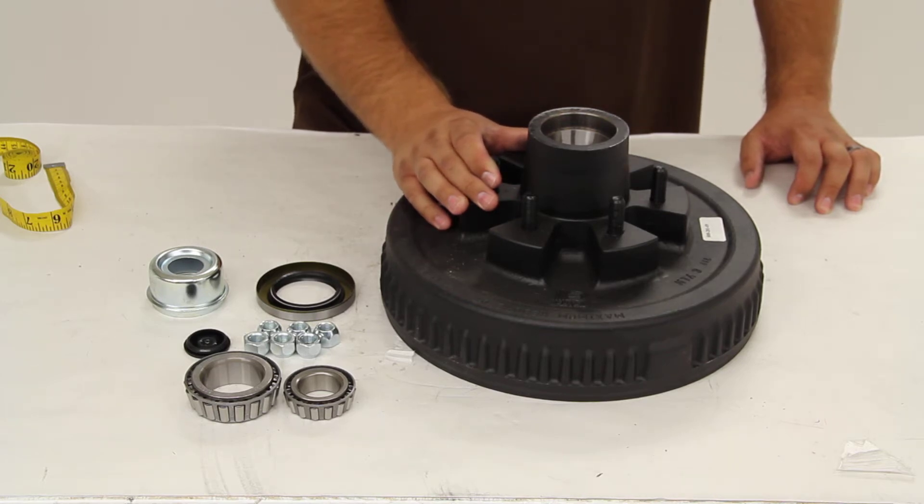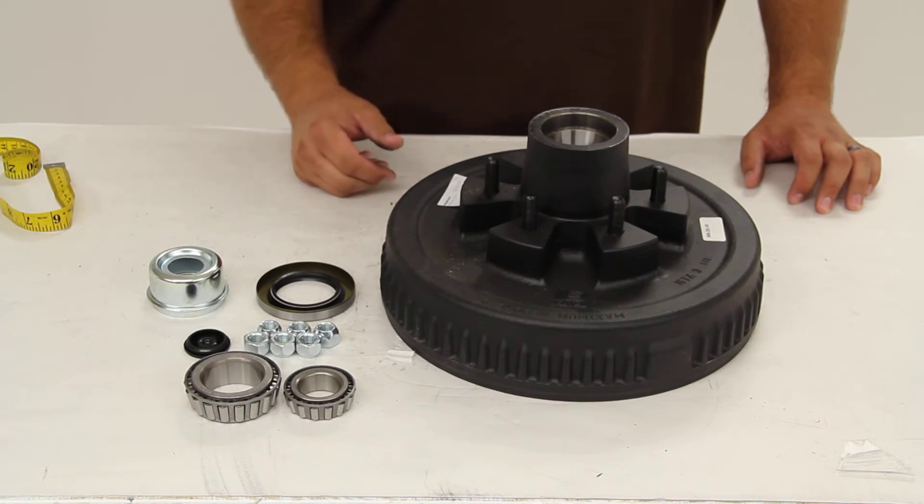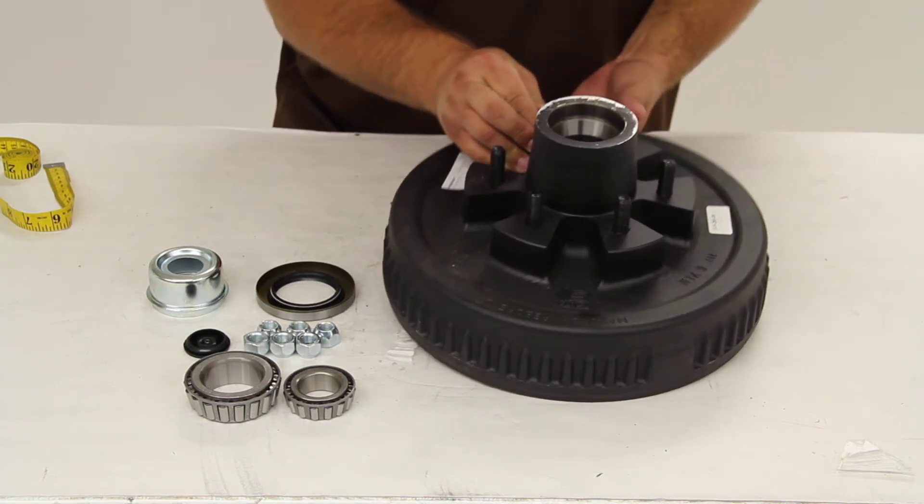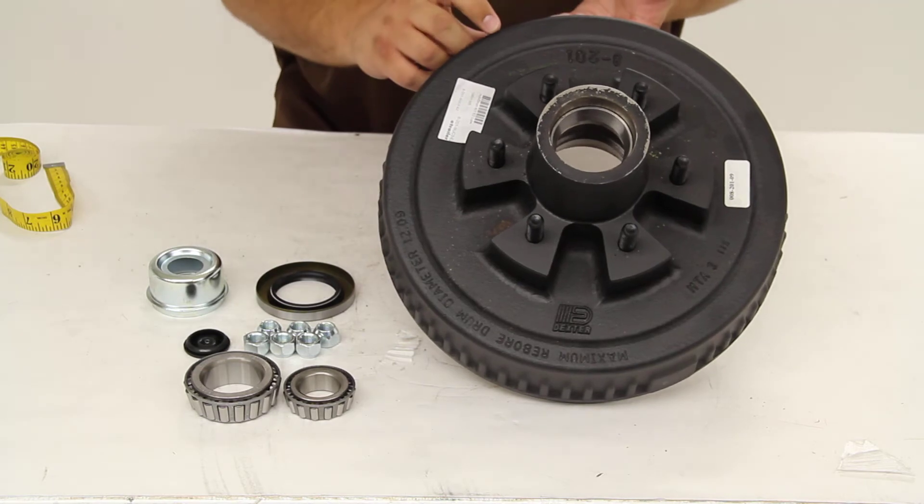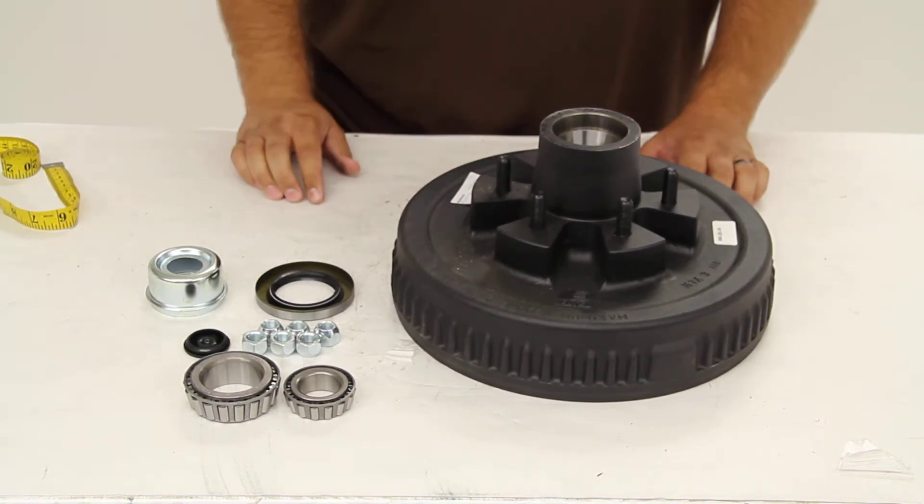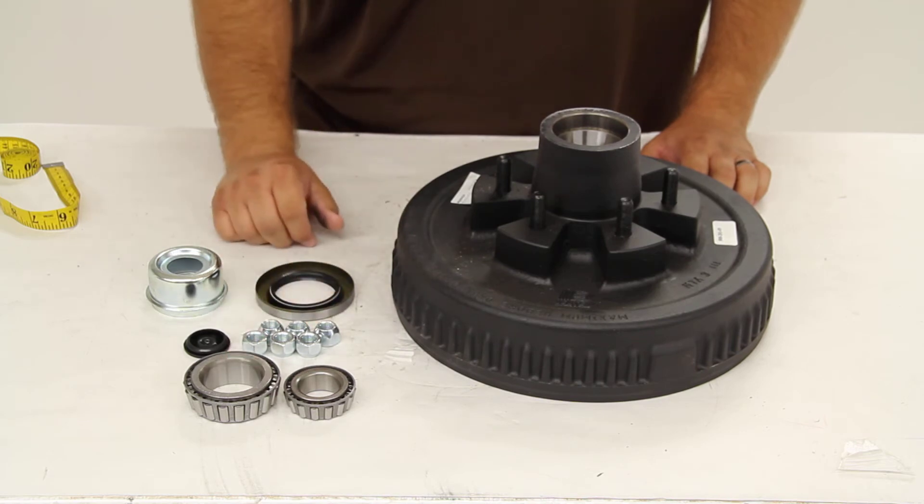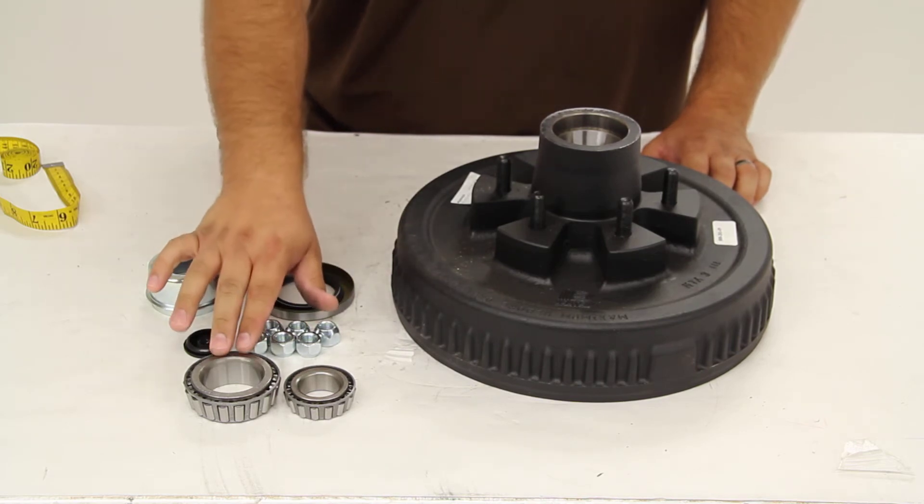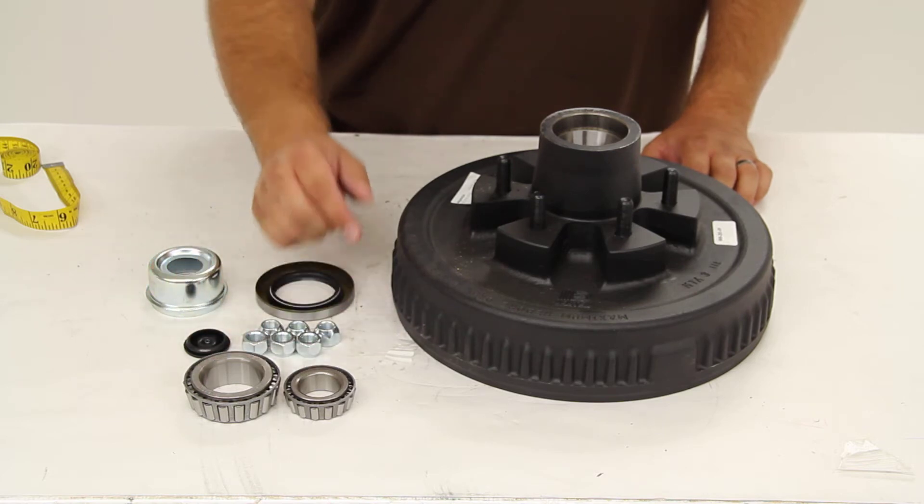Included with this drum are all the parts that you'll need to mount it to your axle. The race is already pressed inside the hub bore. You also have your bearings. The inner bearing is 25,580 and the outer bearing is 15,123.